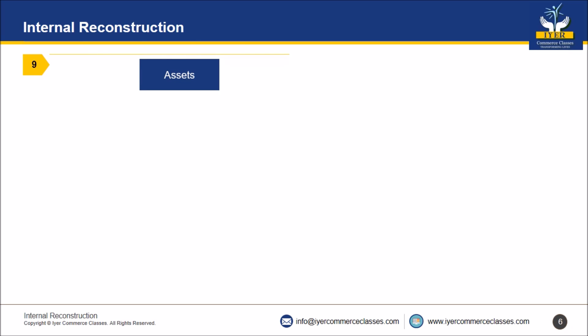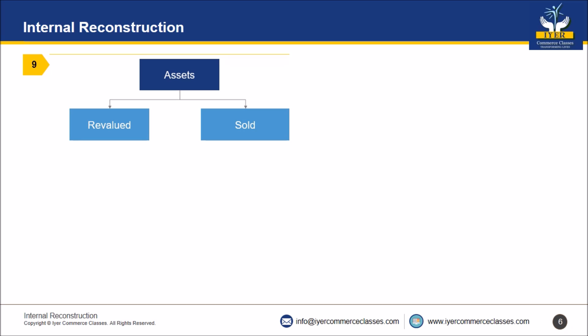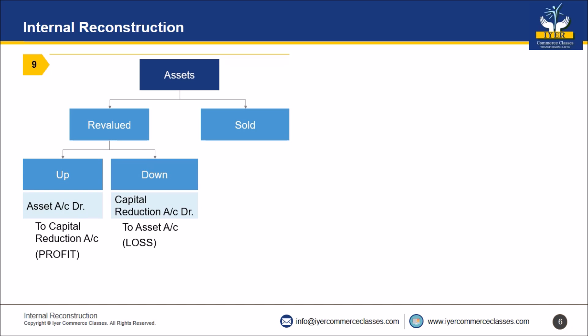The rule for assets: assets are either revalued or sold. If revalued upward, it is a profit — entry will be Asset Account debit, to Capital Reduction Account. If revalued downward, it is a loss — entry will be Capital Reduction Account debit, to Asset Account. If assets are sold, cash comes in — entry will be Cash/Bank Account debit with the selling price, to Asset Account with the book value. Any difference will be transferred to Capital Reduction Account.